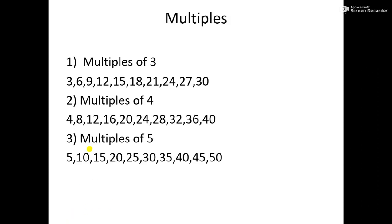Let's revise these multiples. If we say write multiples of 3, then we will write those numbers which can be divided by 3: 3, 6, 9, 12, 15, 18, 21, 24, 27, 30. These are all the numbers which can be divided by 3.